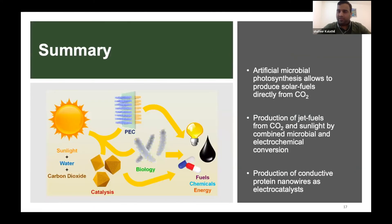As a summary, the take-home message is that we can use semi-artificial microbial photosynthesis to produce solar fuels and chemicals directly from carbon dioxide without any energy input — sunlight is the only energy source. We can also make jet fuel — though it is an ambitious project — by combining microbial photosynthesis with fermentation and Kolbe electrolysis to make energy-dense alkanes. Additionally, we can produce sustainable green nanowires, similar to carbon nanotubes, as conductive materials and bio-catalysts for energy applications.